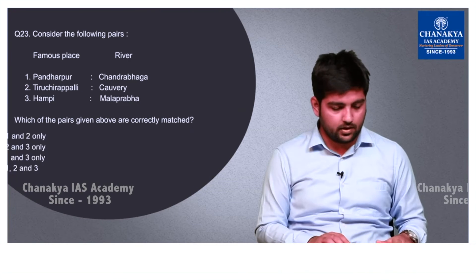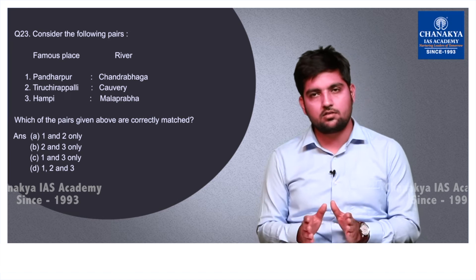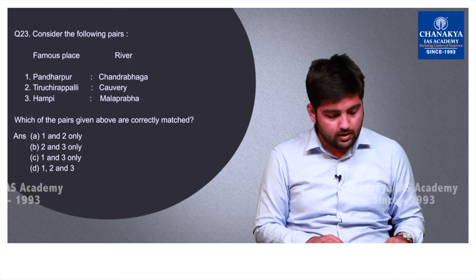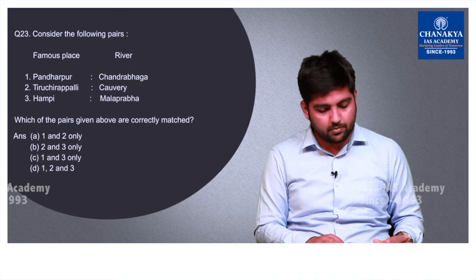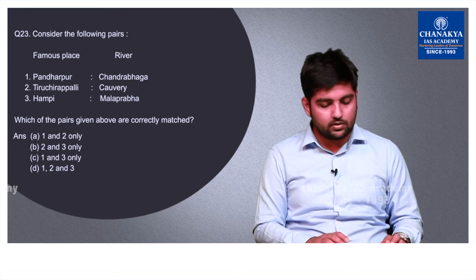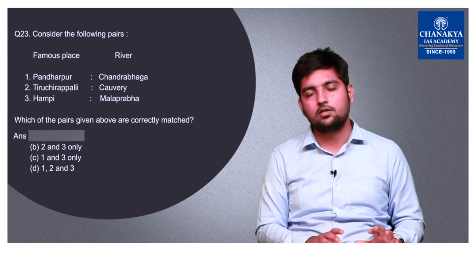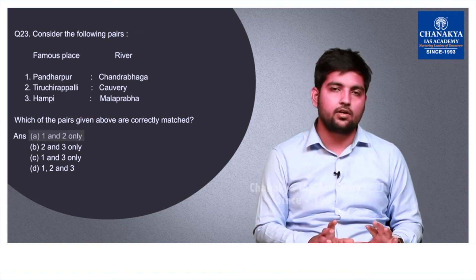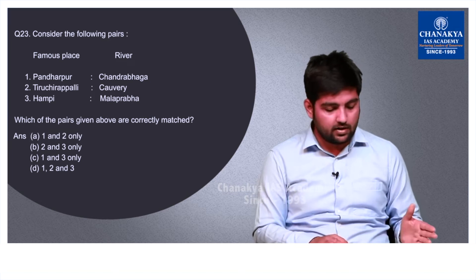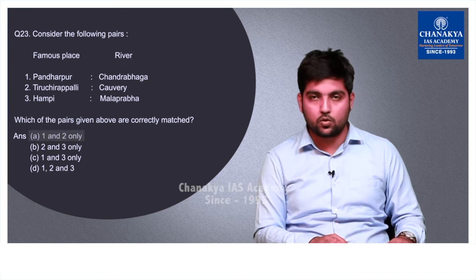Question number 23 is a matching question about famous places and the rivers on which they are situated. The correct answer is A — 1 and 2 only — because Hampi is situated on the banks of the Tungabhadra River. A person familiar with the Vijayanagara culture and ancient history of India will be able to solve this. If we eliminate option 3, we are automatically left with option A.